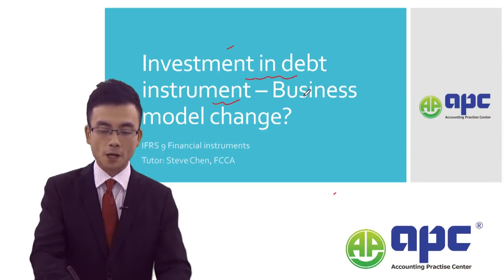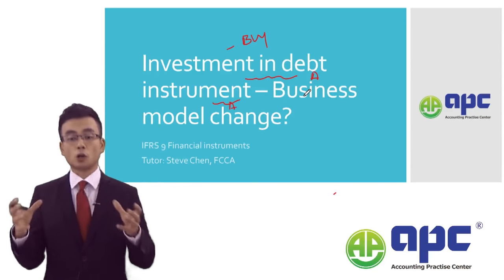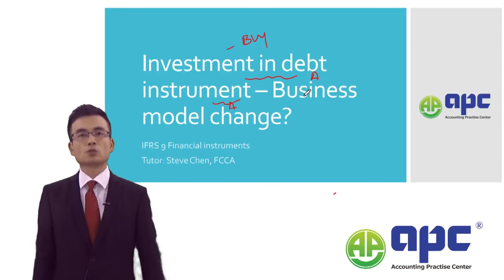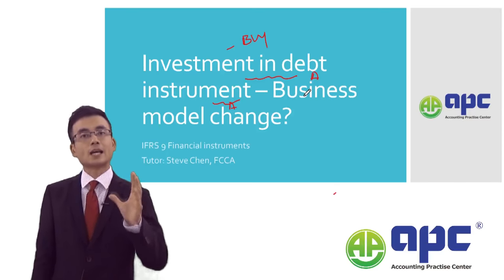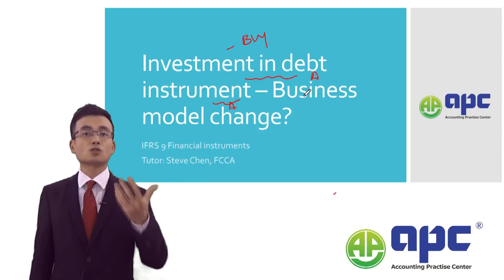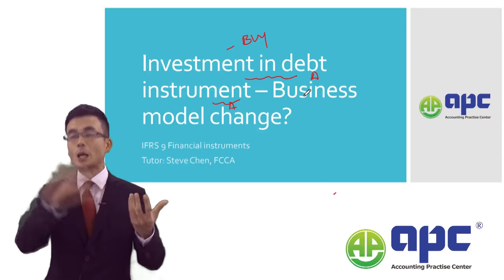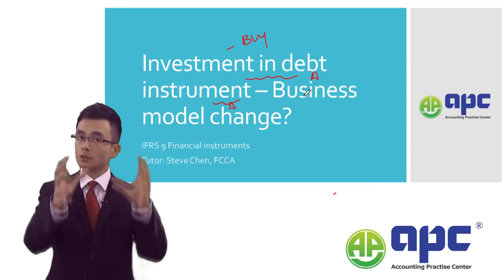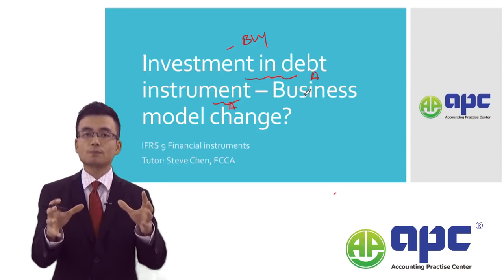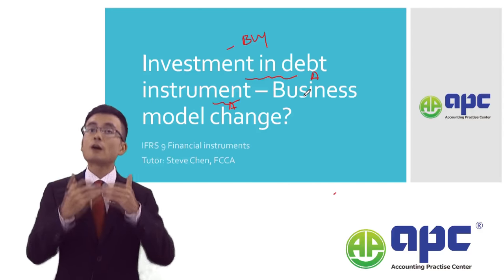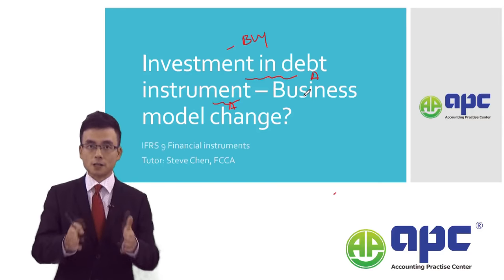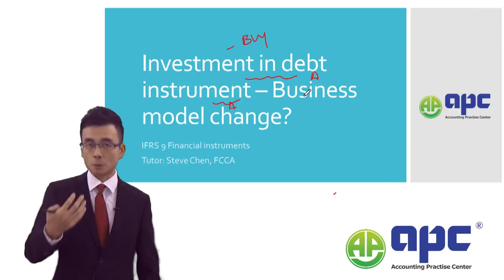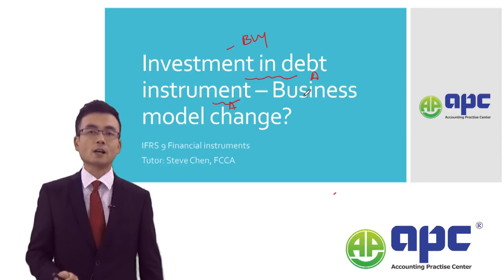Investment means buy. You are buying debt as the instrument, because instrument means you've got a contract. A company wants to borrow money and it issues a debt instrument. It issues debt and then you buy it. Because you are buying it, you can use that contract to earn interest. That means you are the buyer, and we are talking about the financial assets here — from a buyer's point of view of how we should account for it.